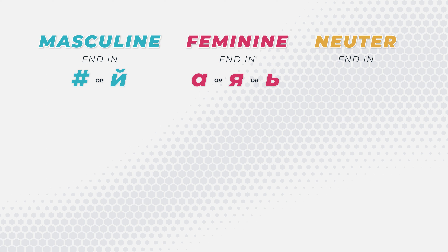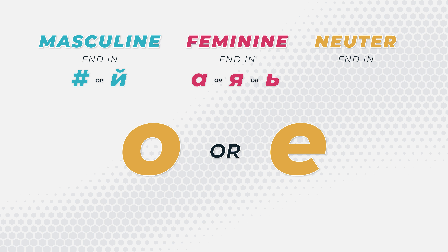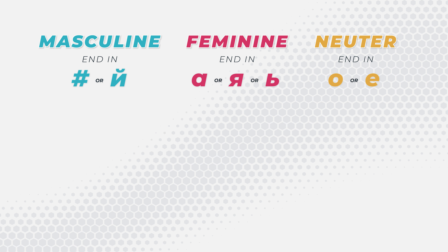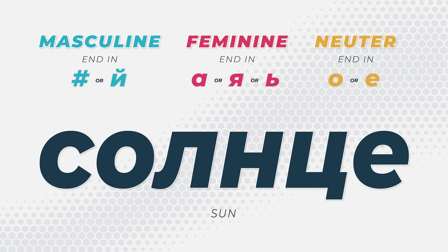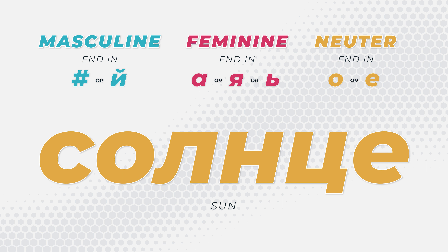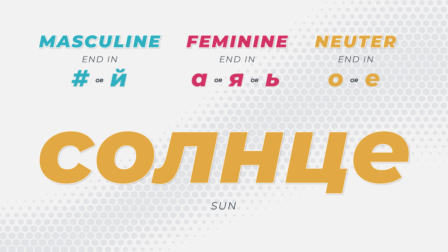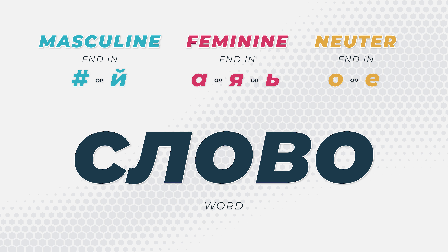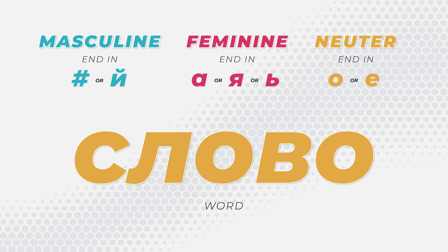The last category — or last gender — is neuter, and words ending in the letters О or Е are neuter. So if we take the example солнце — sun — we see that this ends in Е, which indicates that it's a neuter word. The word слово means word; it ends in an О, so we know that it is a neuter word.